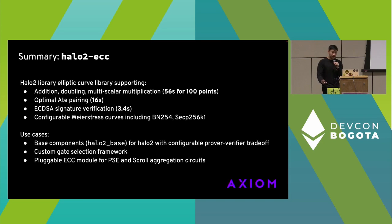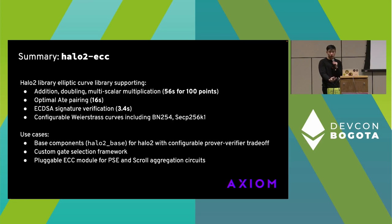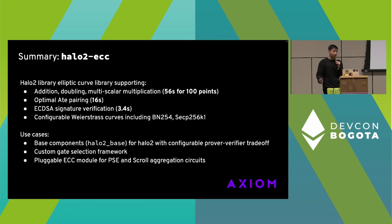In summary, we have this library, Halo 2 ECC. We can support pretty much all the operations you'd want to do on elliptic curves — highlights include the pairing check, ECDSA signature verification, and the ability to configure the base curve without too much work. We also want to highlight our base component library, Halo 2 Base, which we open sourced this week, and which allows us to write these circuits in a much more modular and configurable way.